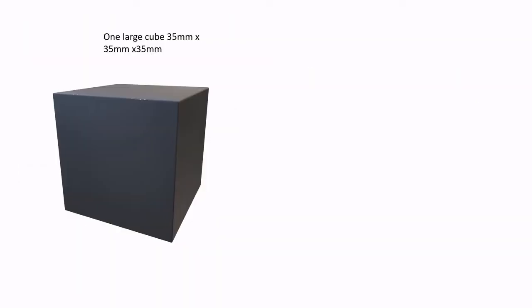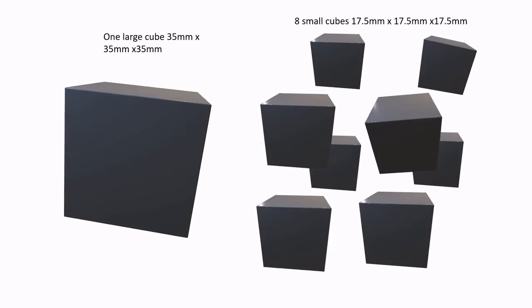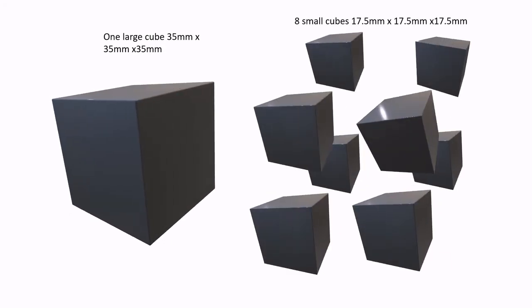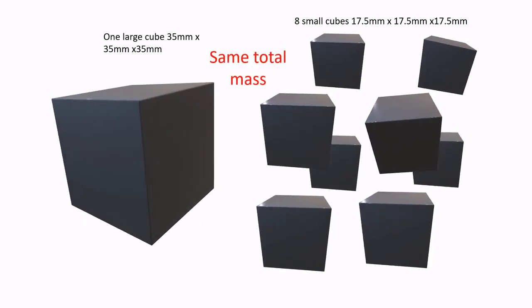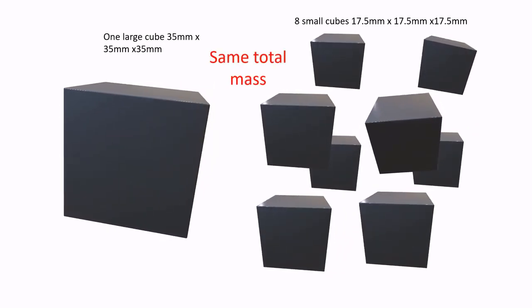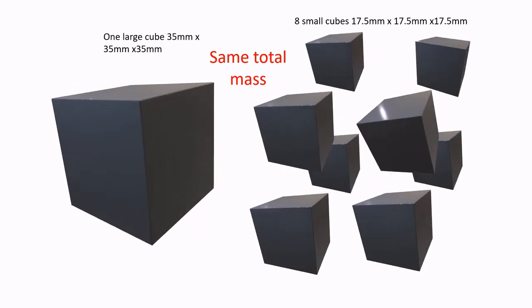In one experimental group, we have a single potato cube with dimensions of 35mm on each side. While in the other group, that large cube has been further cut into eight smaller cubes. But the total mass of the potato in each group is the same. The potato mass is a variable that should be controlled.